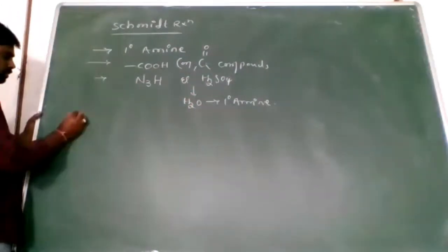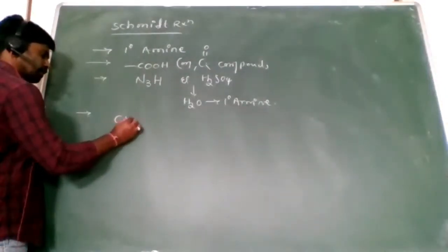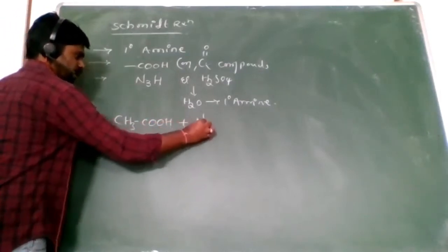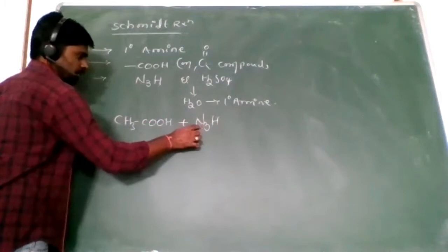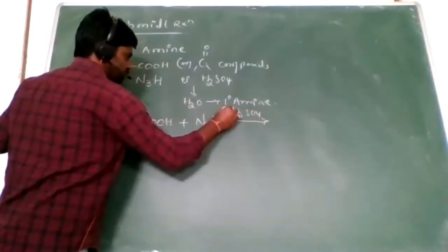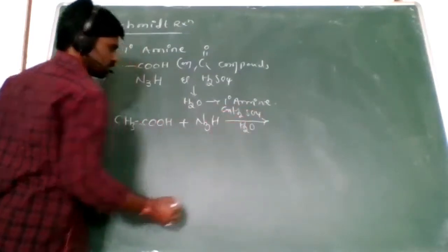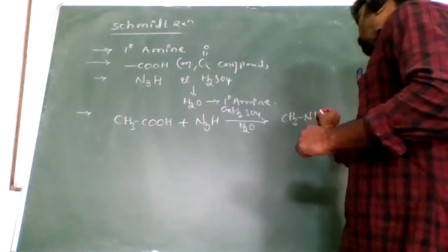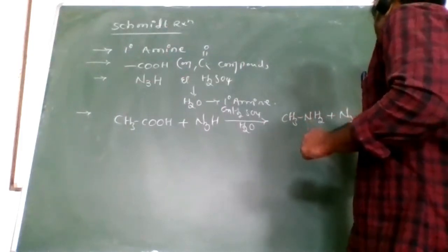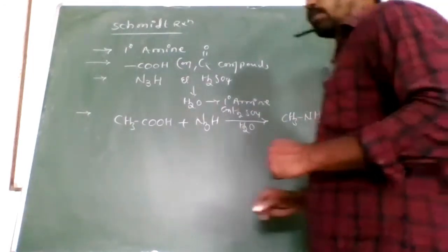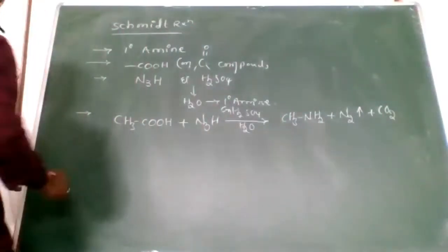Now I'll read the reaction. This is CH₃COOH reacting with hydrazoic acid HN₃, in the presence of concentrated H₂SO₄ and hydrolysis with water. We get CH₃NH₂. There is also evolved nitrogen gas and carbon dioxide.